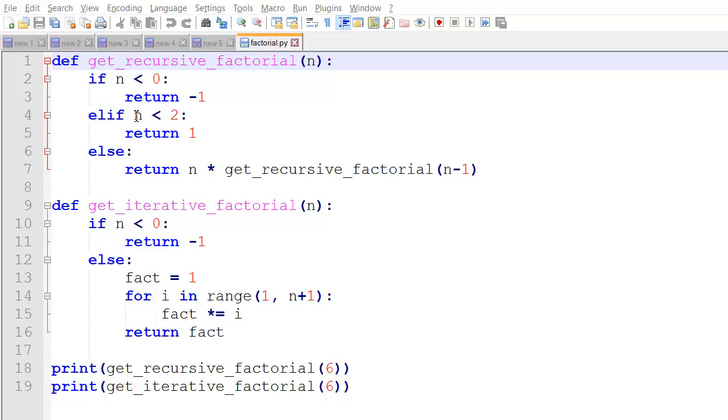Otherwise, this will test for our base case. If n is less than two, in other words it's zero or one, we return one, because the factorial for both zero and one is one. And otherwise, it's a recursive case, so we're going to return n times the get factorial for n minus one. Or in the case of six, we would say six times get recursive factorial of five.